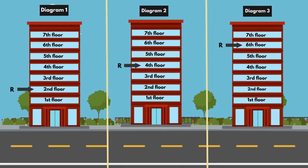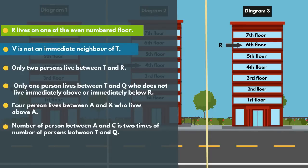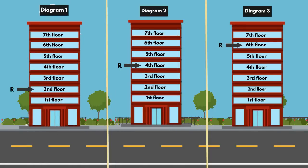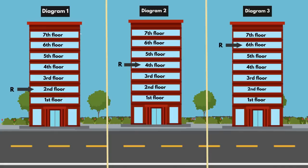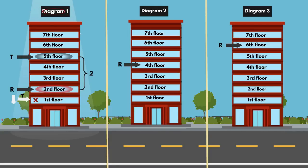Go to the next statement: V is not an immediate neighbor of T. In all possible diagrams we don't know the places of V and T, so skip this statement — we will discuss it later. Next statement: Only two persons live between T and R. In Diagram 1, R lives on the 2nd floor. We have only one floor below R, so we can't place T below R. So place T on the 5th floor only — only two persons live between T and R.